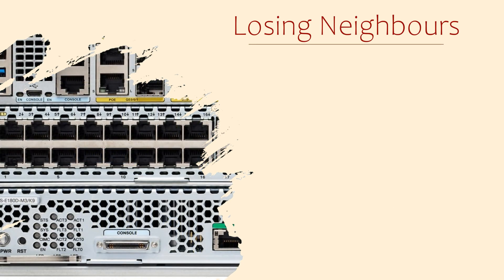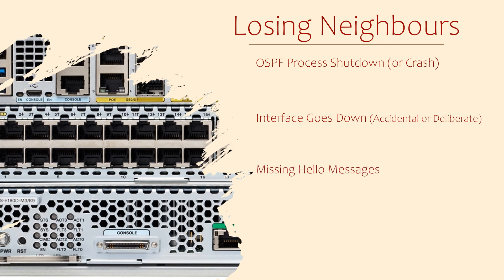Now we'll look at how neighbors fail. When neighbors fail, or a link to them does, this changes how traffic flows through the network. We can broadly consider three possibilities: when the OSPF process is shut down or fails; when the interface the neighbor is on goes down, deliberately or accidentally; and when hello messages go missing. Usually when the OSPF process shuts down it's deliberate — we can do this with the shutdown command under OSPF configuration, for example when we want to do maintenance and don't want the router advertising routes for a while.